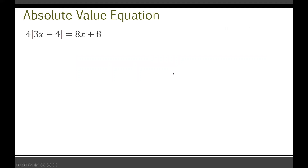An absolute value equation is where you have an absolute value built into something and it's equal to another side. The first thing you want to do is get that absolute value piece all by itself. Notice there's a four multiplying outside of it, so a good first step is to divide both sides by four — and you have to divide the entire side, not just part of it.